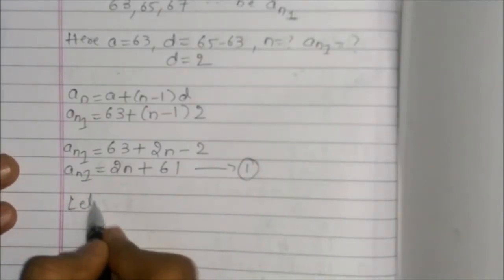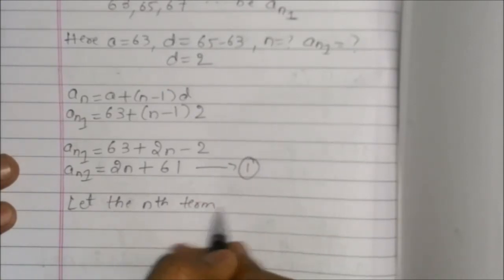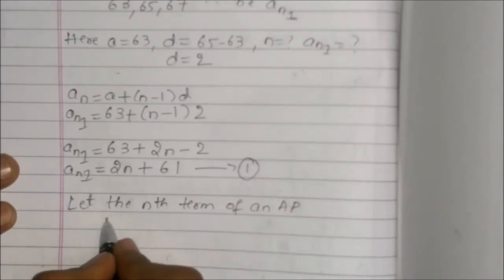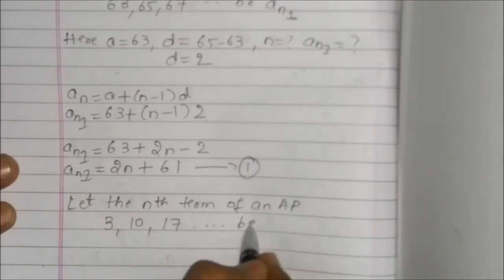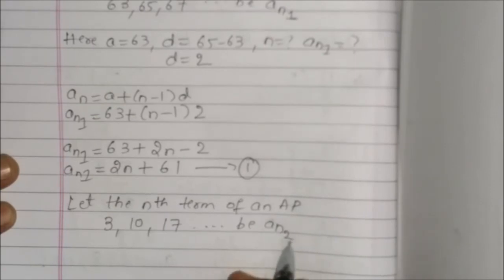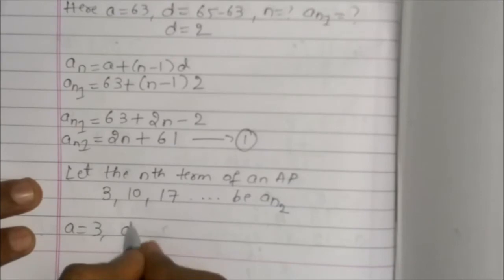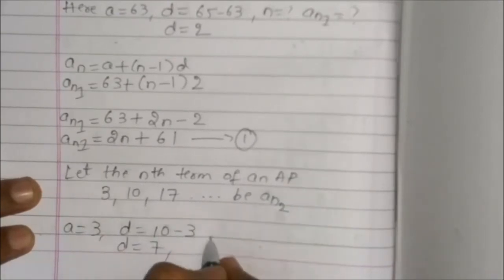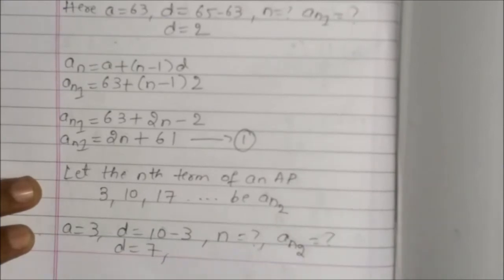Now, let's consider the nth term of AP 3, 10, 17 be An2. Here we know that a is equal to 3, d is equal to 10 minus 3, so d is equal to 7. N is unknown, An2 is unknown.